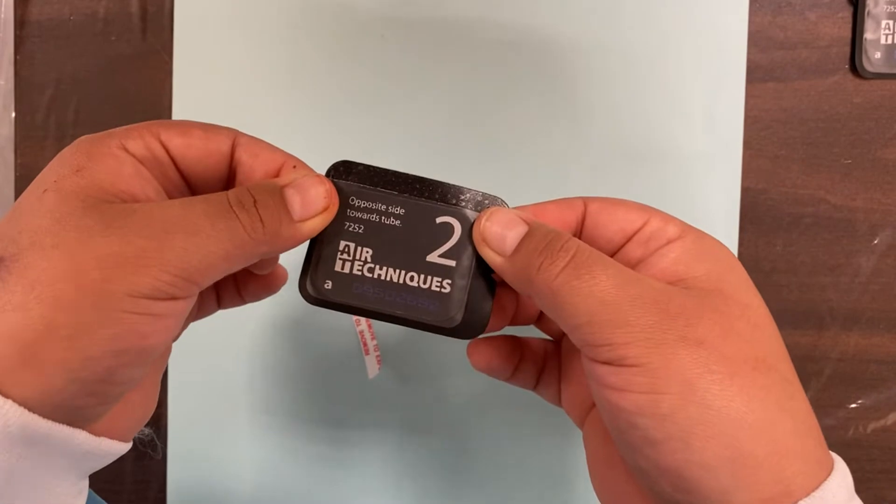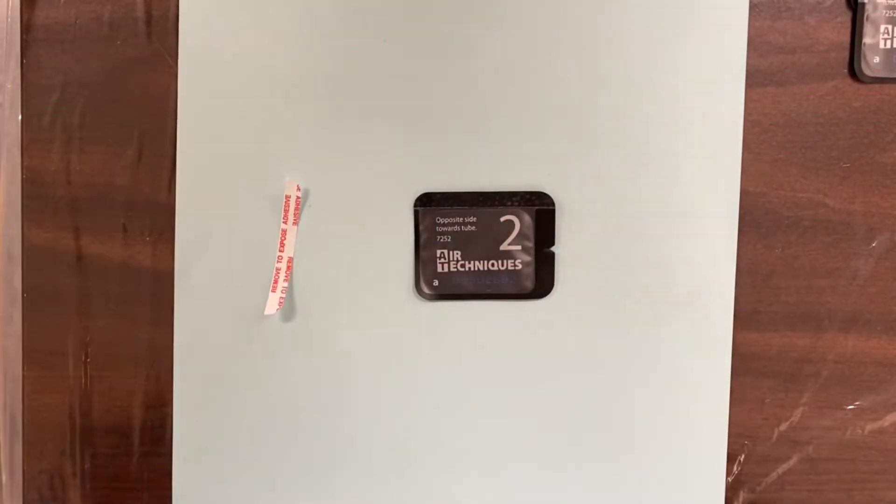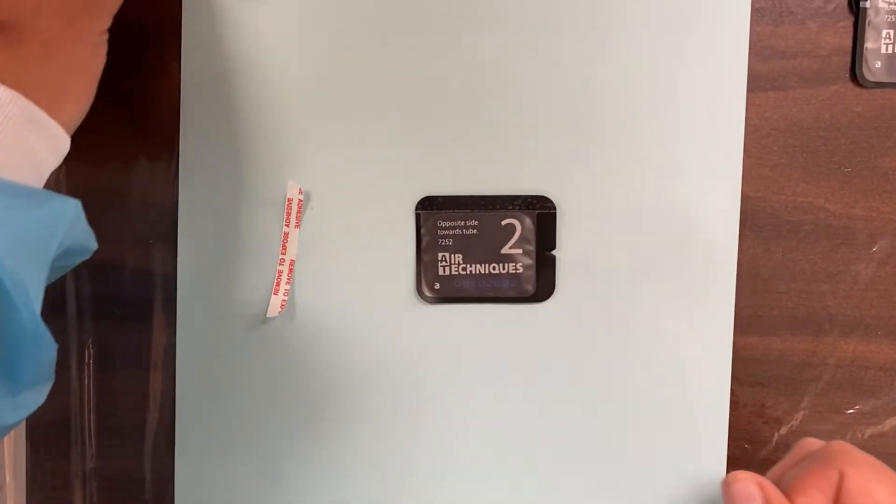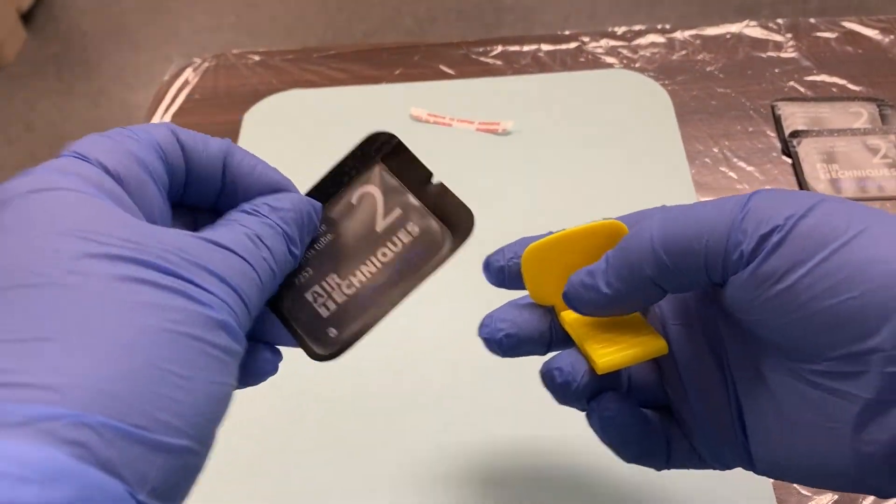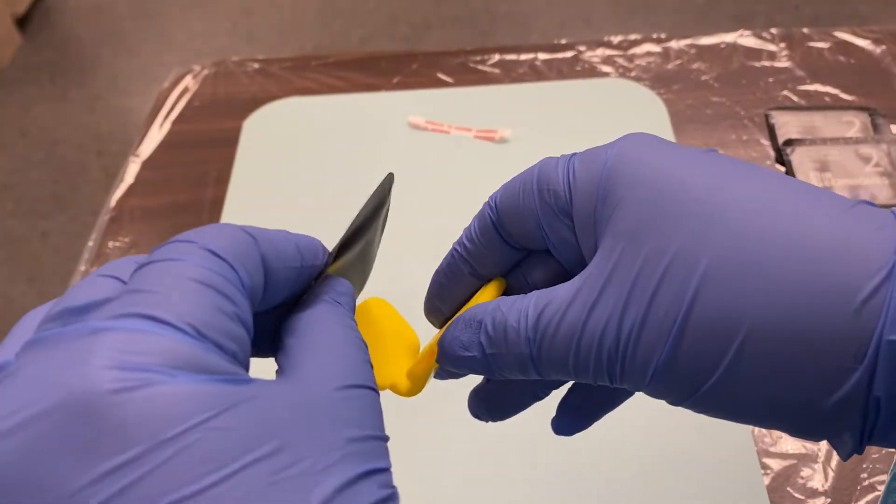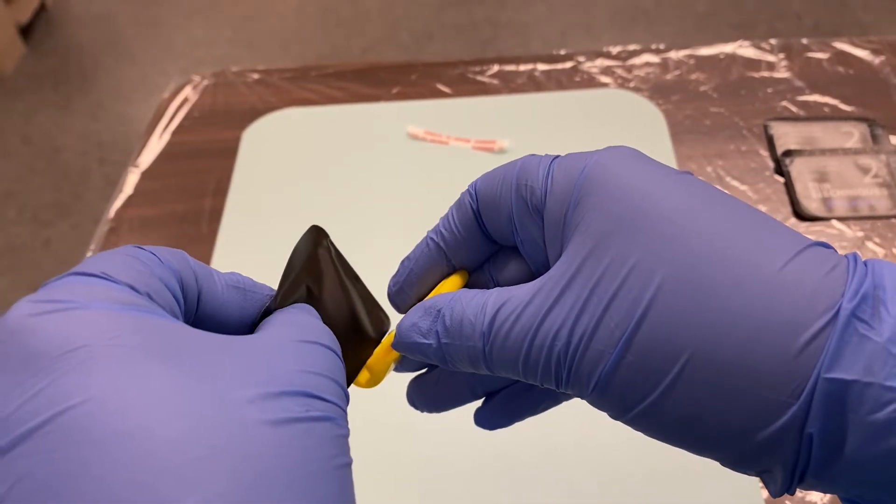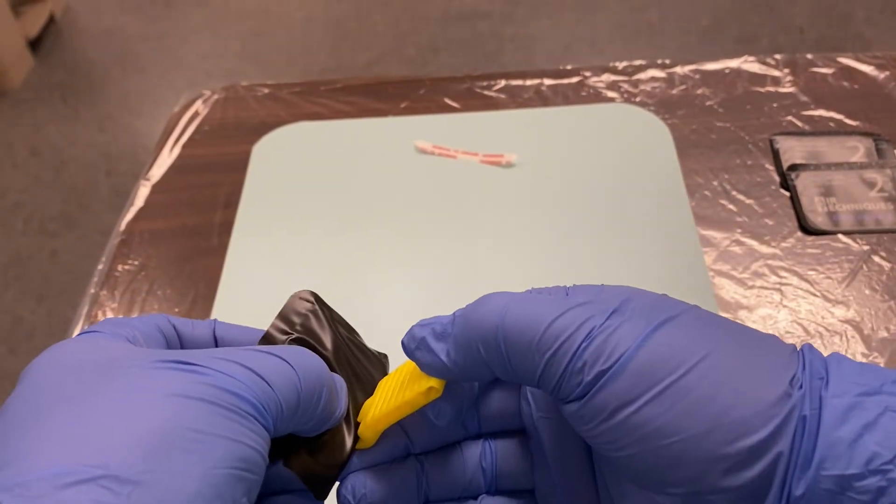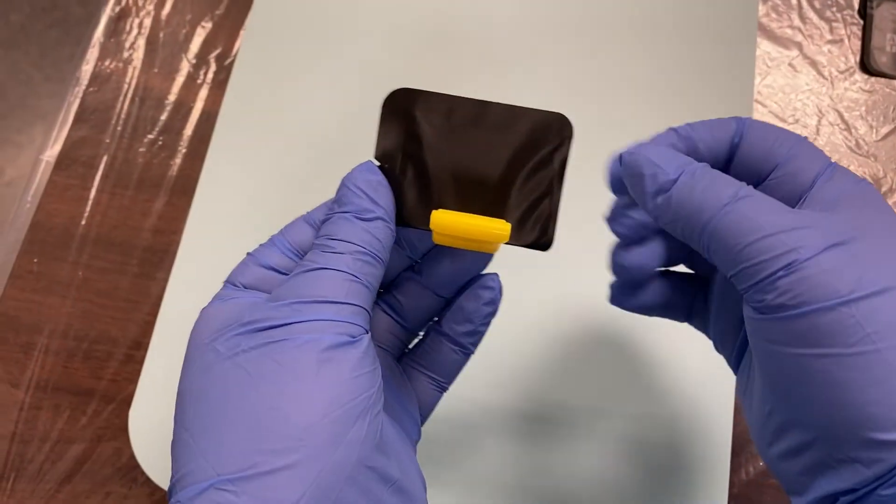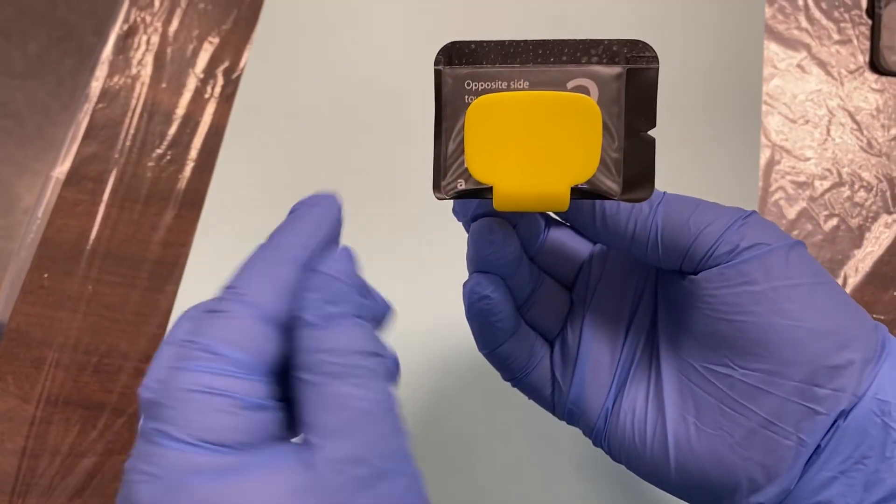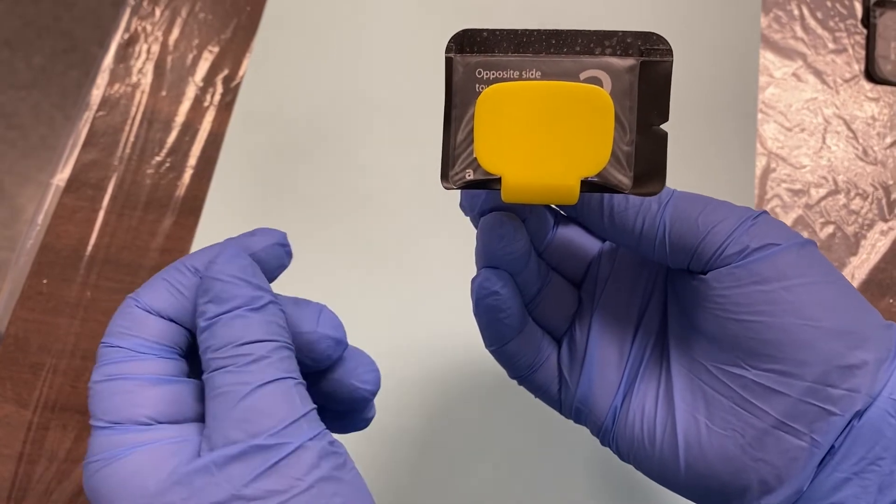Also, like this, we're going to be able to read that it says opposite side towards tube and that'll help us upon the placement of the bite block here. So we want to make sure that the block side is facing outwards just like so and we want to place it nice and tidy right in the center and make sure that the A is on the lower left side since we're taking a PA here.